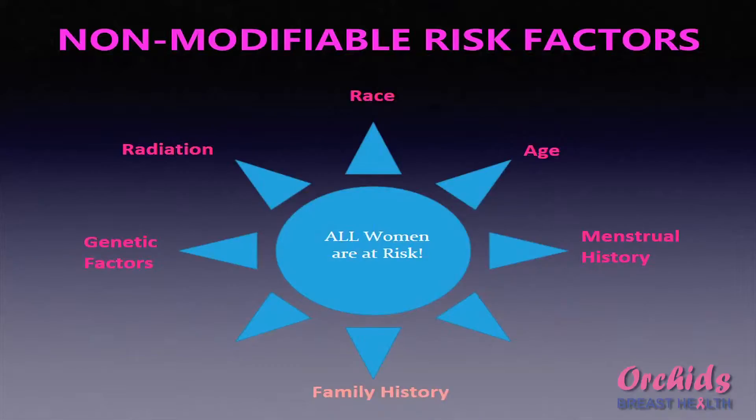First, let us look at the risk factors that cannot be changed. Race — the Caucasian race has a much higher incidence of breast cancer than the Asian or Indian race. Age is another factor we cannot change. Breast cancer is very common in India at around 40 to 45 years of age, whereas in western countries it occurs about 20 years later, around 60 years of age.